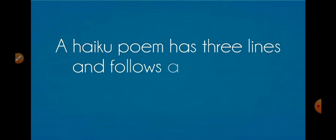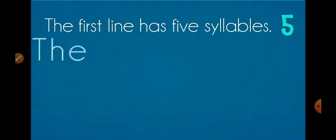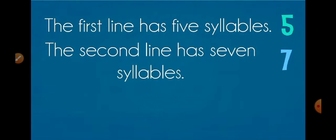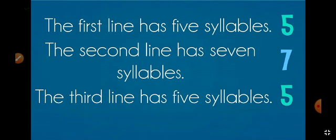So these are known as syllable count. A Haiku poem has three lines and follows a pattern of syllables. The first line has five syllables, the second line has seven syllables, and the third line has five syllables.